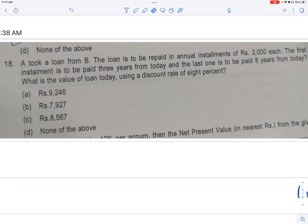I'll read the question. A took a loan from B. The loan is to be repaid in annual installments of Rs. 2000 each. The first installment is to be paid three years from today and the last one is to be paid eight years from today. What is the value of loan today using a discount rate of eight percent? So you can pause the video, try it on your own.